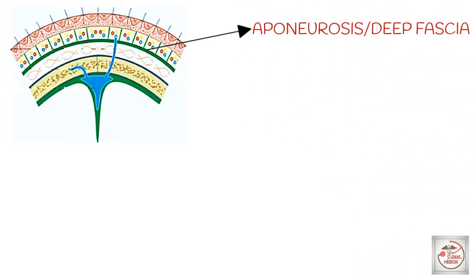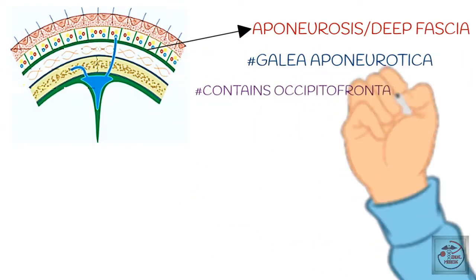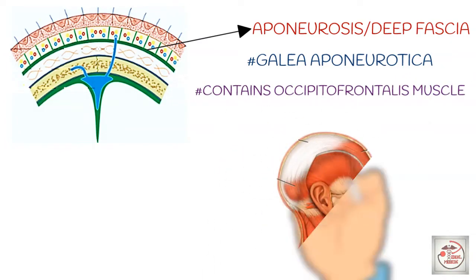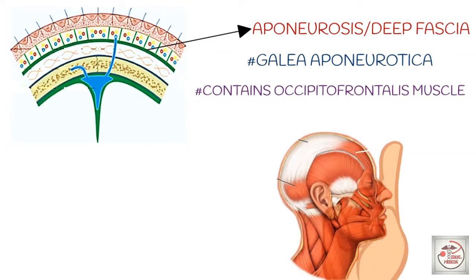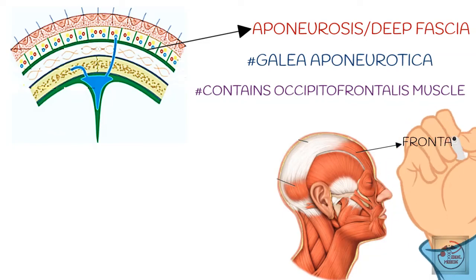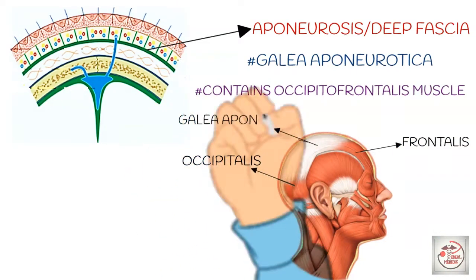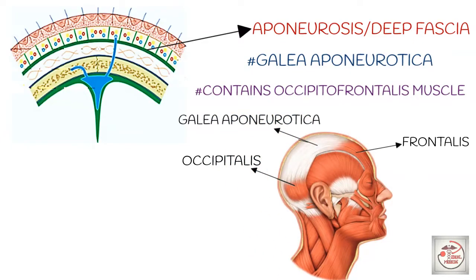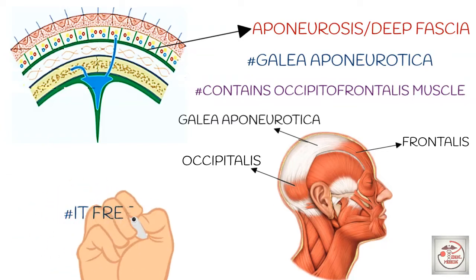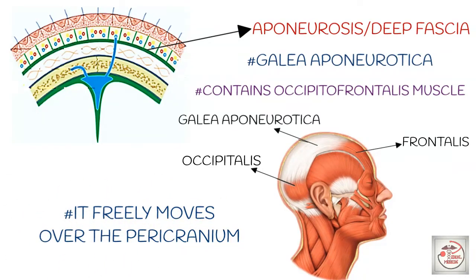The third layer is aponeurosis or deep fascia, also known as galea aponeurotica. It contains the occipitofrontalis muscle. In the picture, the frontalis muscle is anteriorly, occipitalis is posteriorly, and the galea aponeurotica connects these two. So anteriorly, the frontalis muscle inserts into this aponeurosis, and posteriorly the occipitalis — that's why we call it occipitofrontalis. It also moves freely over the pericranium.